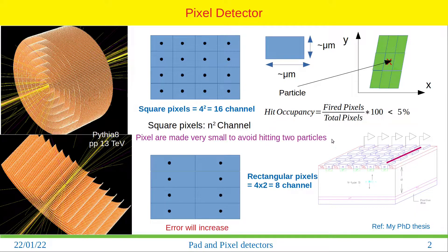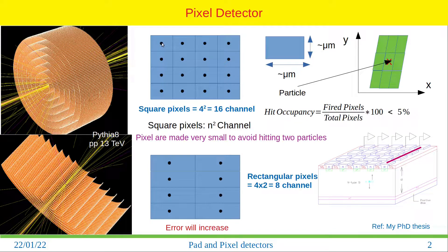In 3D, pixels look like this — as I explained in my previous video. If you see from the top, you will have many square pixels. For a simple geometry, if we have 4 pixels in one direction and 4 pixels in the other direction, each pixel has a channel which collects the charge created by the particle. In this case we have 4 squared, meaning 16 channels. In general, if you have n pixels in each direction, you will have n squared channels.